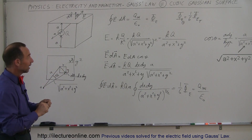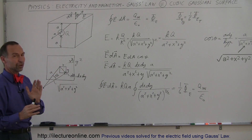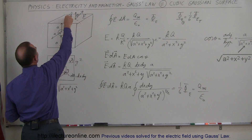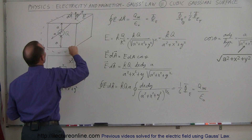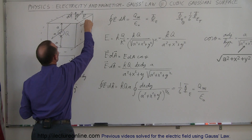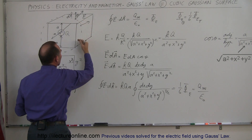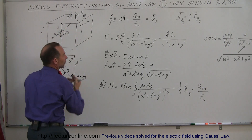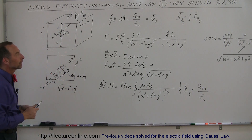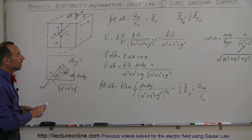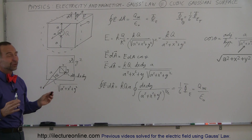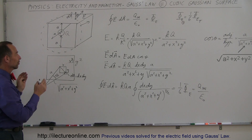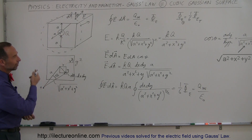You don't want to deal with that integral when drawing a Gaussian surface. Always draw the Gaussian surface so that the electric field from the charge is perpendicular to the surface at every point. Therefore, spherical surfaces or cylindrical surfaces are the way to go. Don't use cubes, rectangles, or boxes — just use spheres and cylinders, and you'll find Gauss's Law a whole lot easier.